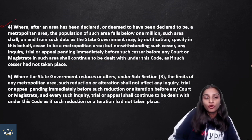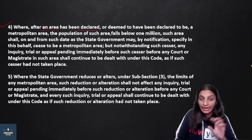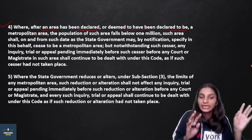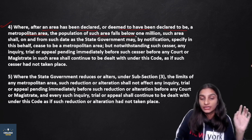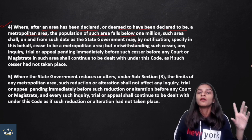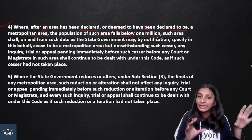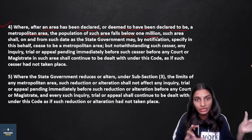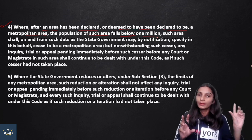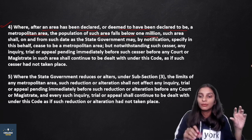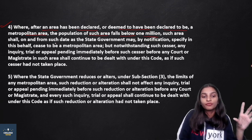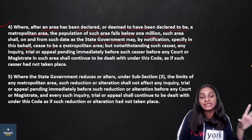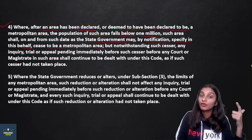Subsection 4: after an area has been declared or deemed to have been declared to be a metropolitan area, if the population of such area falls below 1 million — because the criterion is that a city or town with population exceeding 1 million is a metropolitan area — then that area shall, from such date as the state government may by notification specify, cease to be a metropolitan area.